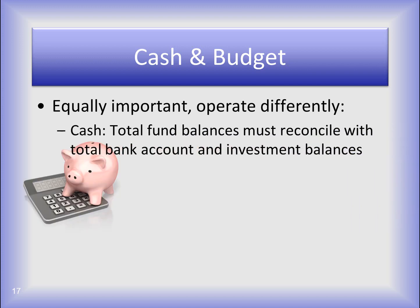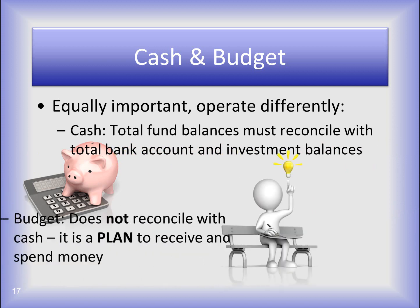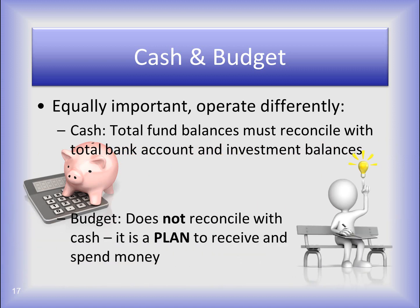The cash and budget are equally important but operate differently. Cash is our total fund balances — they must reconcile with the total bank account and investment balances each month. The budget does not reconcile with the cash, nor does it reflect an available cash balance. It's a plan. You must make sure the money is received and spent according to the plan. But the budget doesn't tell you how much money you have in the bank to spend, and the cash doesn't tell you how much you have available to spend from the budget. They are different.